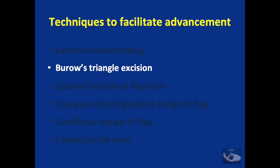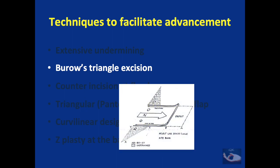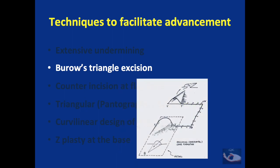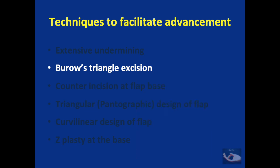When there is a suturing of two sides of varying length we get what is known as a reclining cone deformity. This occurs even in an advancement flap, and you can make out the reclining cone deformity that has formed. The use of a Burrow's triangle excision to correct this reclining cone deformity will help in the advancement of the flap.